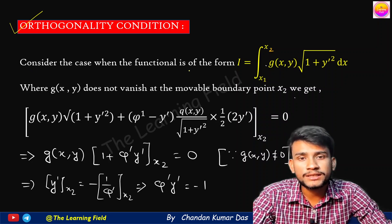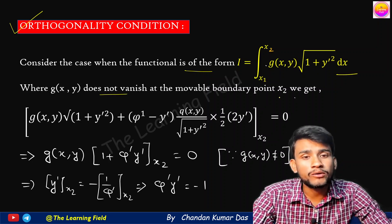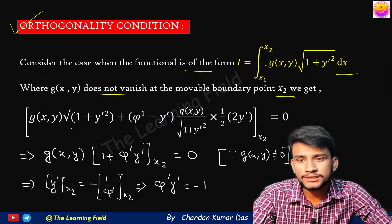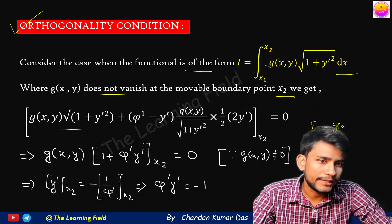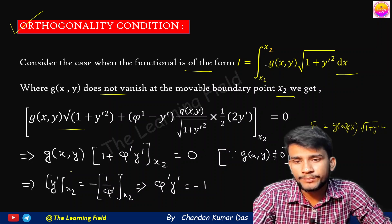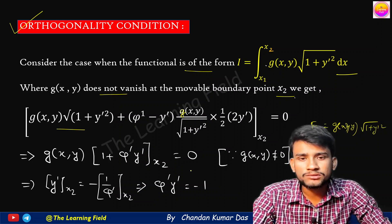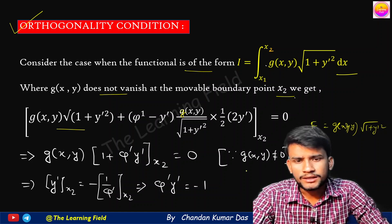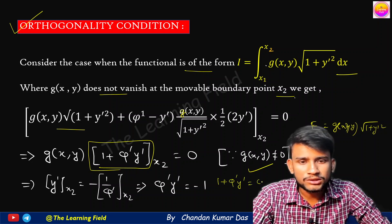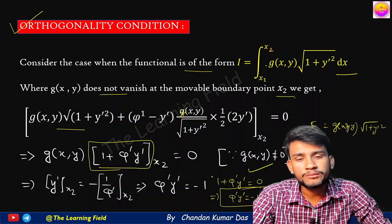One more important result is the orthogonality condition. Consider the case when the functional is of the form I = ∫ g(x,y) · √(1 + y'²) dx, where g(x,y) does not vanish at the movable boundary point x2. Here f = g(x,y) · √(1 + y'²). Substituting into the transversality condition and factoring out g(x,y), we get 1 + φ'·y' = 0, which gives φ'·y' = −1. This is the orthogonality condition for the moving boundary problem.